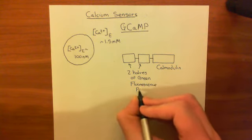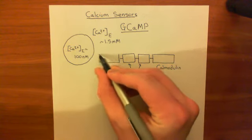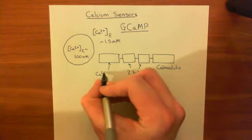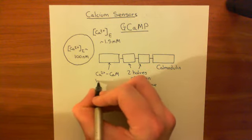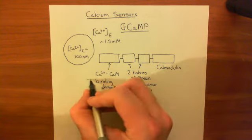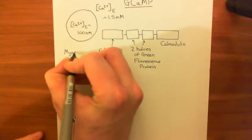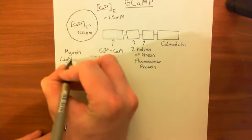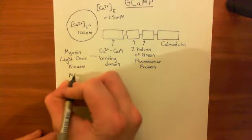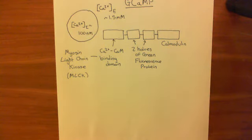The next thing we have is the calmodulin binding domain of the myosin light chain kinase. So we put something over here which is basically the calmodulin binding domain - it's going to bind calcium-calmodulin complexes. And where do they get this binding domain from? They take it from a protein known as myosin light chain kinase, which is important in the contraction of smooth muscle, often abbreviated as MLCK. So we take the calcium-calmodulin binding site of MLCK.